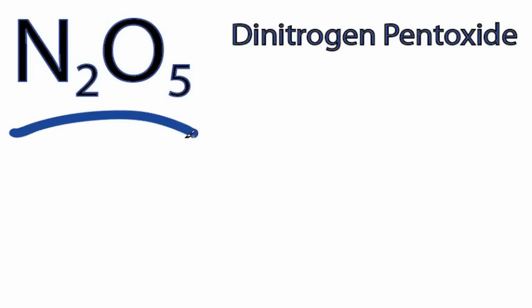The Lewis structure for N2O5 is a bit challenging. If you had time, you could work to fill the octets and find a combination where they all were satisfied, and you could look at the formal charges and make sure they were as close to zero as possible. But let me start you out with the skeleton structure, and we'll work from there just to save some time.